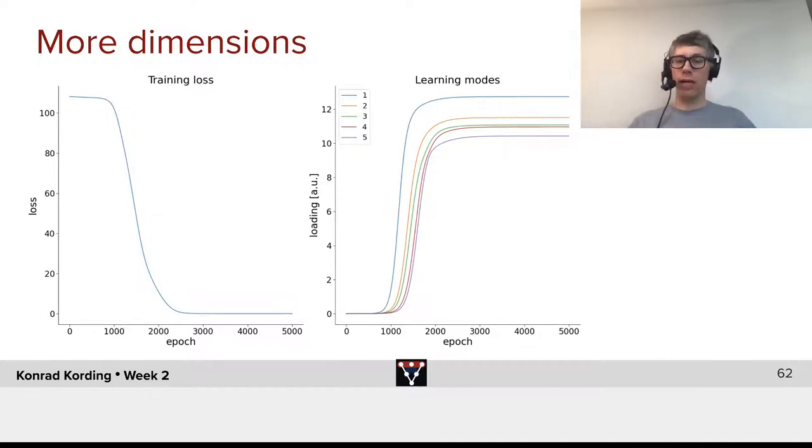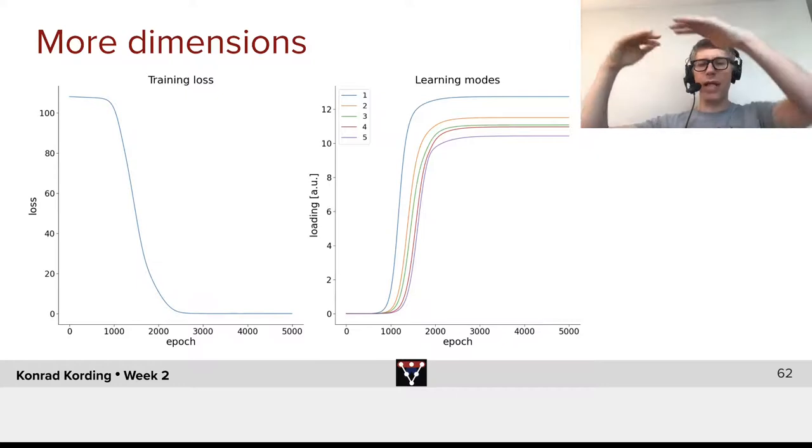If we zoom into this, we can look at the various modes. What do we see? We have a first mode that kicks in, and then we have a second mode, an orange, that kicks in, a green mode that kicks in, and so on and so forth. Interestingly, all of these basically start at zero, then the learning happens, and then they converge.